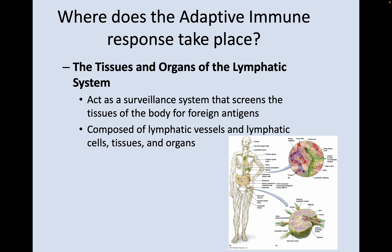So where does the adaptive immune response take place? In the tissues and organs of the lymphatic system. They act as a surveillance system that screens the tissues of the body for foreign antigens. It's composed of lymphatic vessels, lymphatic cells, tissues, and organs — think lymph nodes in your neck. You have lymph nodes scattered throughout your body as well, as you can see in the diagram.